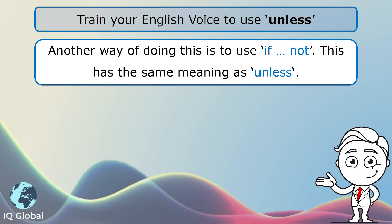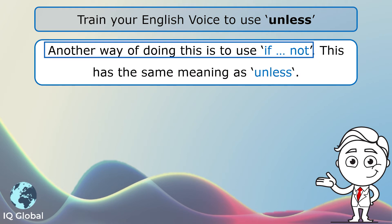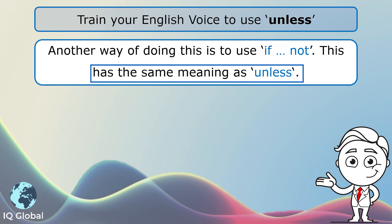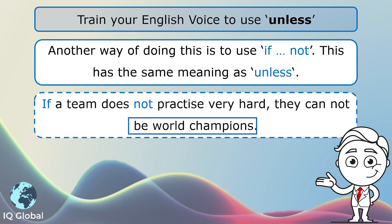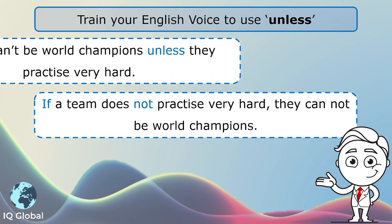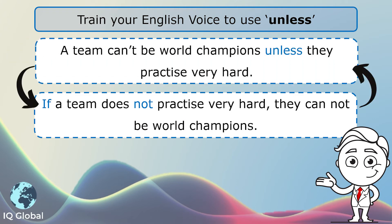Another way of doing this is to use 'if not'. This has the same meaning as 'unless'. Let's have a look at the sentence example: 'If a team does not practice very hard, they cannot be world champions.' So this is another way of saying the same sentence. Let's have a look at another example.